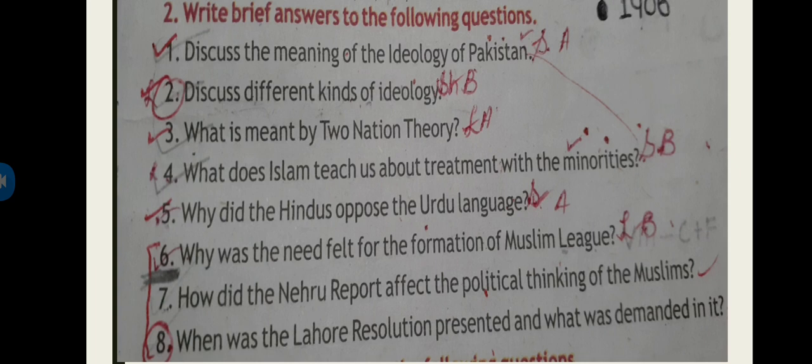For the short question answers, there are eight questions: discuss the meaning of Pakistan ideology; discuss different kinds of ideology; what is meant by the Two-Nation Theory; what does Islam teach us about treatment of minorities; why did Hindus oppose the Urdu language; why was the need felt for the formation of the Muslim League; how did the Nehru Report affect the political thinking of Muslims; and when was the Lahore Resolution presented and what was demanded in it. In new books, question number two — 'discuss different kinds of ideologies' — is missing, so you will add it to have all eight short questions.